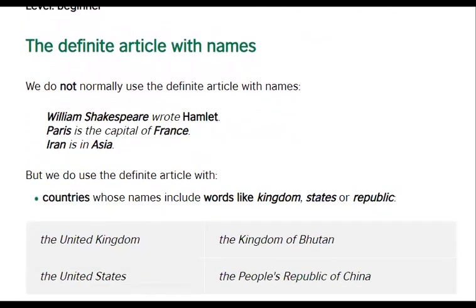The definite article with names. We do not normally use the definite article with names. 'William Shakespeare wrote Hamlet.' 'Paris is the capital of France.' 'Iran is in Asia.' We do not say 'the Iran is in the Asia' or 'the Paris is the capital of the France.' No — we do not use definite articles with names.